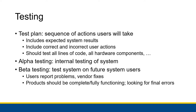Users might be given some direction, like reviewing specific functionality using the given procedures. Beta tests are given to a whole bunch of users — they might even just be let loose to use the new system, see how it goes, and report any issues. The users report problems, the developers fix those issues and release an update, users use the updated version and report any new problems, and this cycle continues.